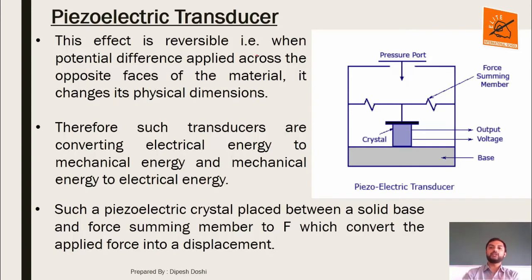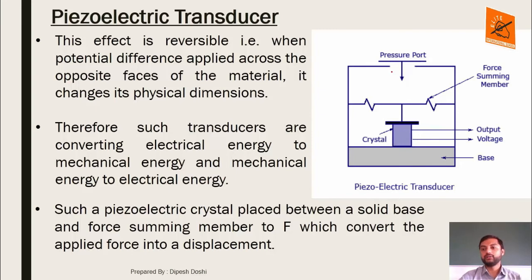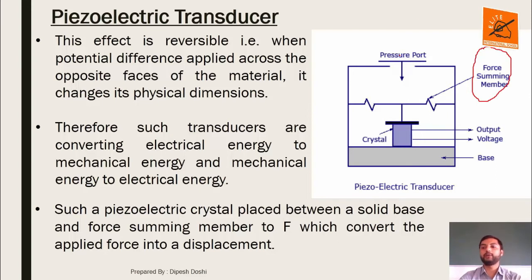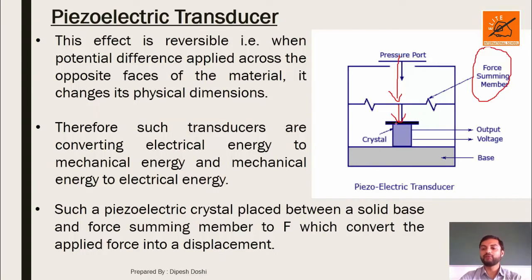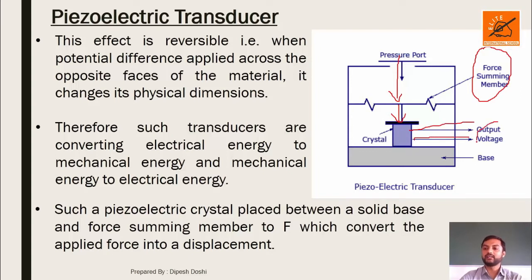This effect is reversible — whenever you apply a potential difference across the crystal, it changes its dimension. From the figure, you can see there is a force-summing membrane which is flexible. Whenever you apply pressure, it gets compressed, and that force is transferred to the crystal. Because of this, mechanical energy is converted to electrical energy, which can be measured using a voltmeter.